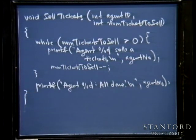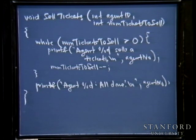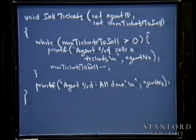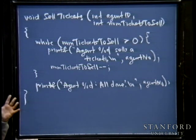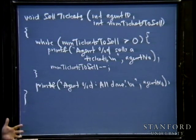The problem is it's not really modeling what would truly happen. The way this is set up, it's clearly going to be sequential — ticket agent one is going to sell all 15 of his or her tickets before anything happens with ticket agent two.